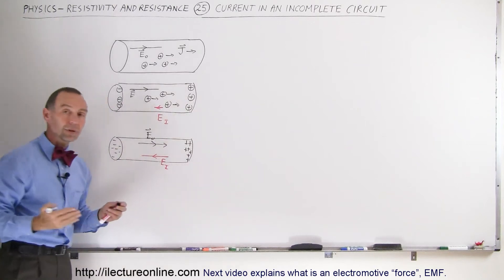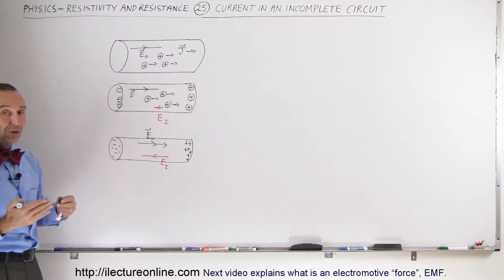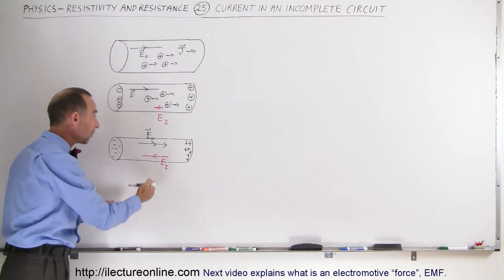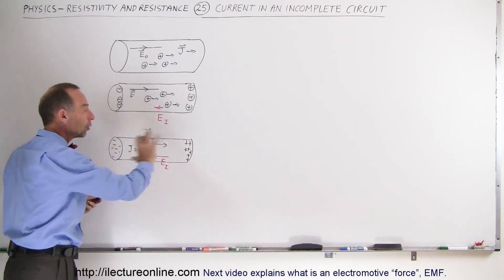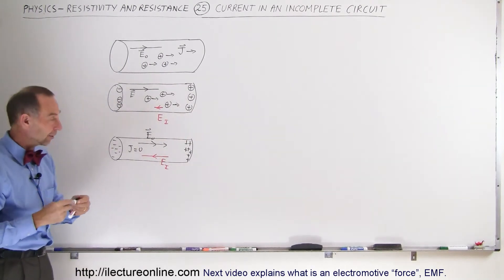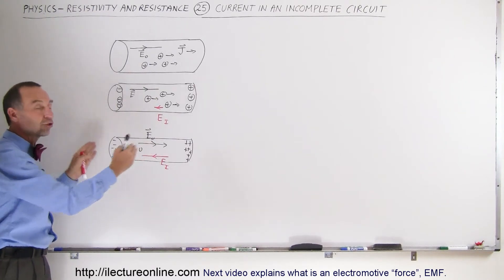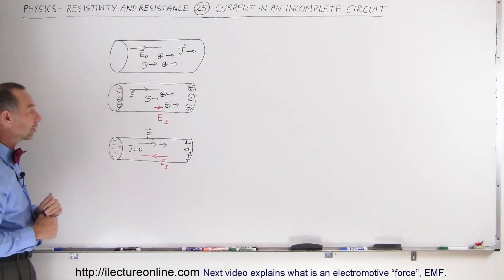And when they become equal in magnitude, and of course they're opposite in direction, they will cancel each other out and then the current density will go to zero and no longer will there be any current flowing in the wire and you'll simply have a separation of charges across that piece of the conductor.